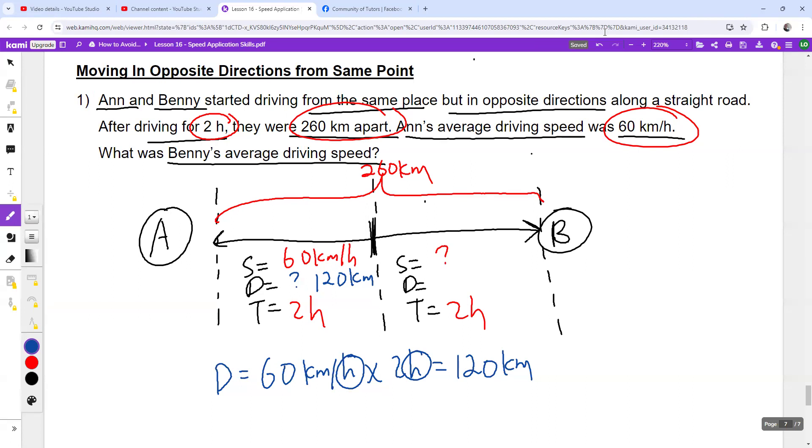Then you look at the model. Is there any other numbers you can fill in? How about the distance traveled by Benny? So you take the total distance. The two of them travel the total distance of 260 km. And you minus 120 km. And you will get 140 kilometers traveled by Benny.